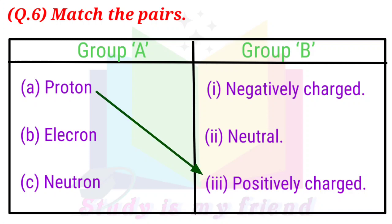Answer: A - Proton matches with 3 - Positively charged. B - Electron matches with 1 - Negatively charged. C - Neutron matches with 2 - Neutral.